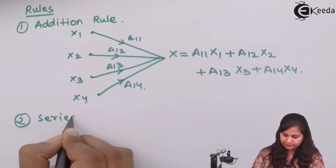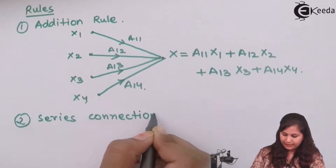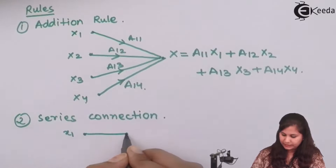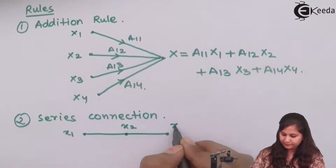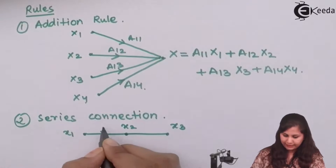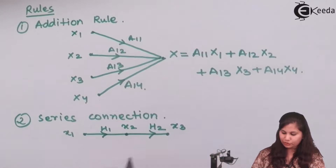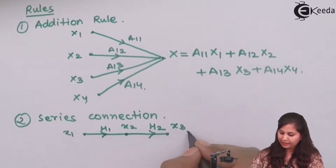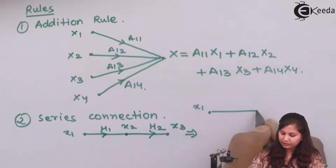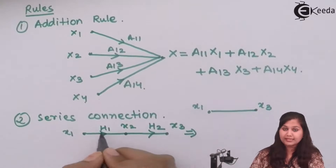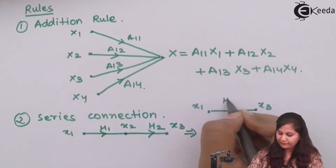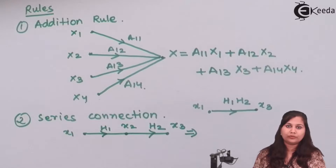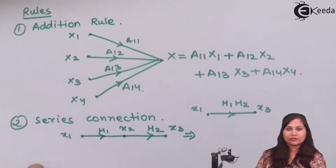The second rule is the series connection rule. If we have node X1 connected to X2 with branch gain h1, and X2 connected to X3 with branch gain h2, these two branches connected in series can be replaced by a resultant branch starting from X1 ending at X3, with the combined gain h1·h2. So series-connected branches have their gains multiplied.